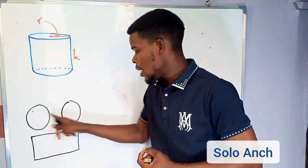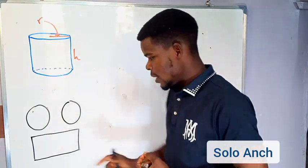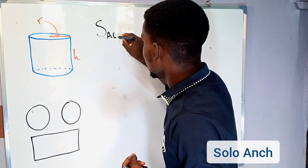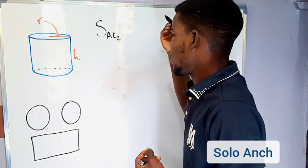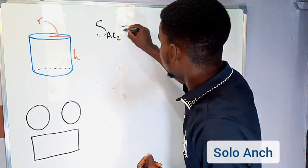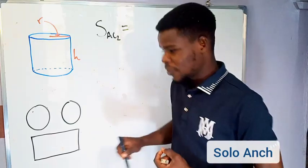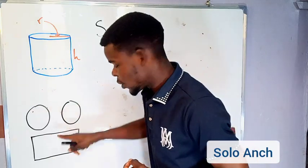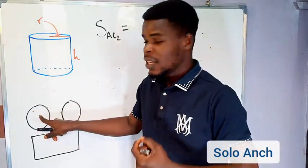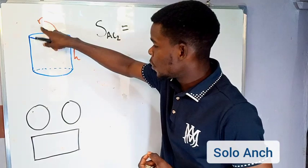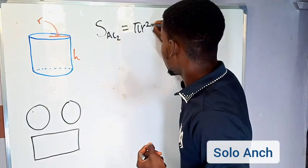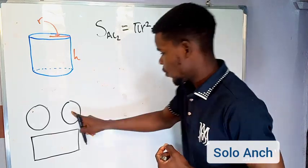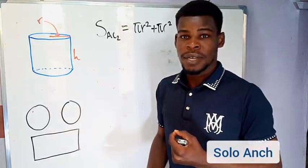To get the surface area of this solid cylinder, we need to get the area of each of these shapes and add them up. So: surface area of a cylinder equals the area of the first circle — since the radius is r, that's πr² — plus the area of the second circle, another πr².